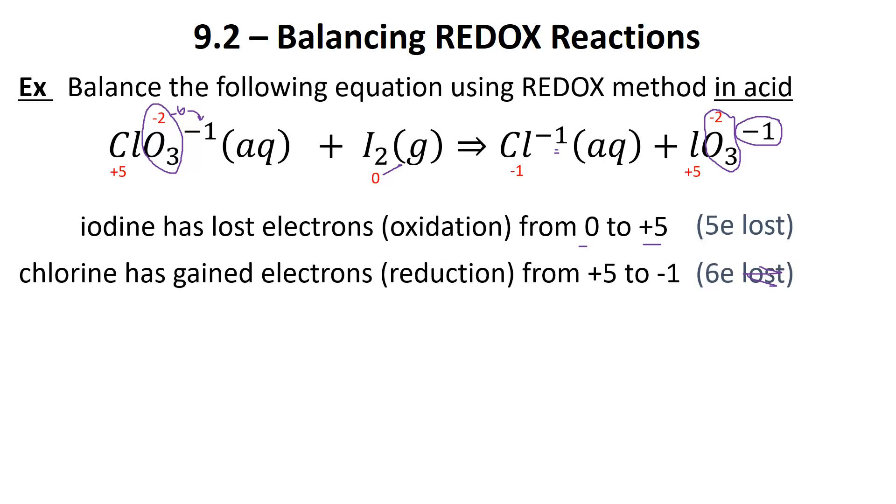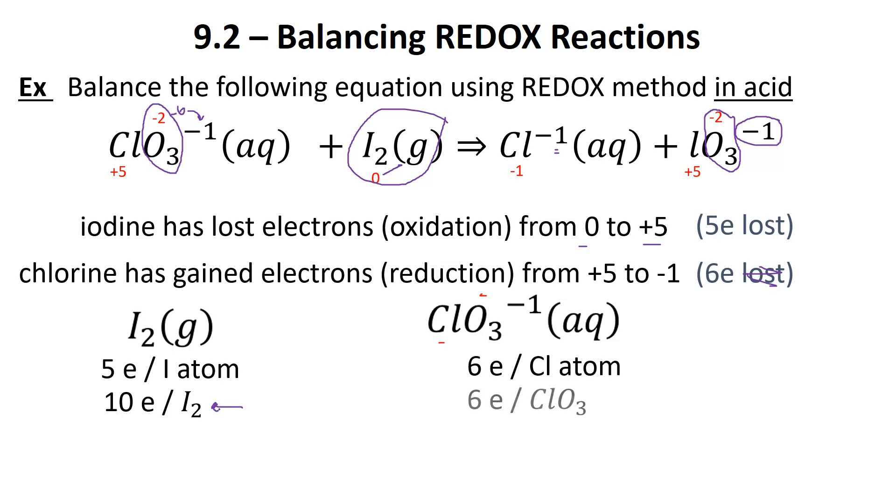Six electrons gained. We're going to have to do our common denominator stuff. Before we do that, we have to realize this iodine has two iodines involved. If we've got five electrons per iodine, that means we have 10 electrons per iodine molecule. This is always per molecule. On the other side, the chlorate gained six electrons, but there's only one chlorine there, so that stays at six electrons.